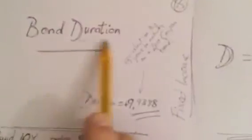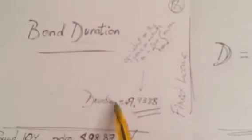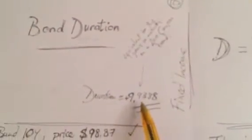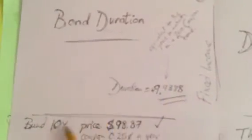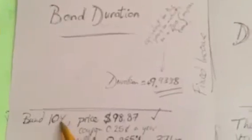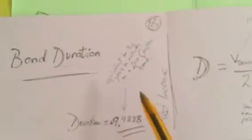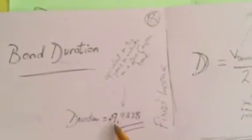Bond duration is the equivalent zero coupon bond which would have the equivalent sensitivity to this plain vanilla bond. So this plain vanilla bond of 10 years maturity has an equivalent duration to a zero coupon bond with maturity of 9.9388 years.